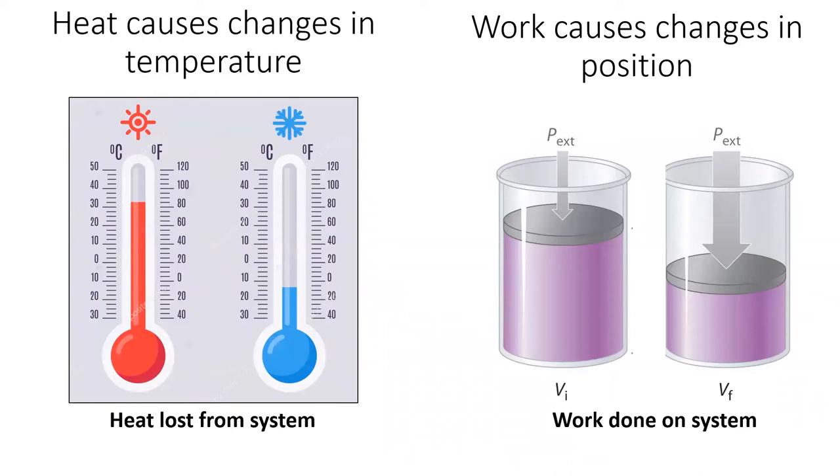Work is a little more difficult to understand. Work is caused by a change in position. In the example of the piston on this slide, the outside atmosphere puts pressure on the piston, compressing the gas inside. This is considered work done on the system. You could imagine that a compressed gas has a higher potential energy than an expanded gas.